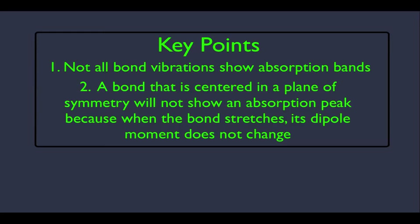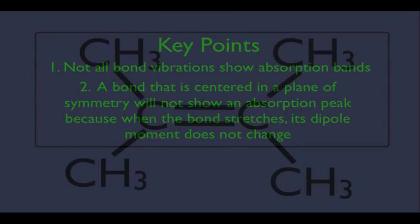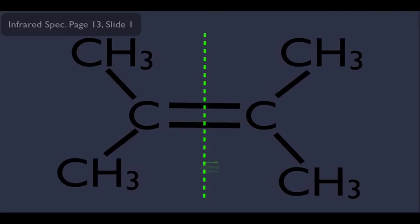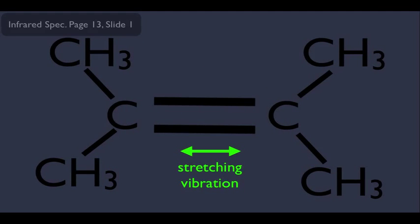So let me give you a specific example here. Consider this molecule right here. Notice we got a C double bond C, but right in the middle of that bond is a plane of symmetry for this molecule. That means if this bond stretches like this, its dipole moment will not change. Therefore, we will not see an observed peak in the IR for this bond.